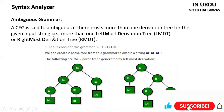We see that we have left derivation or right derivation, and the output expression against the input should be the same. If we have more than one type of derivation, we can create more than one derivation tree.